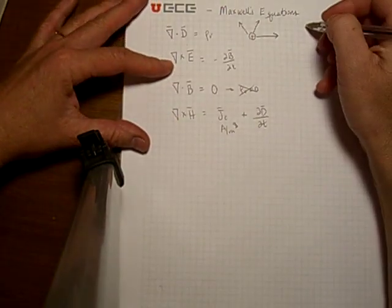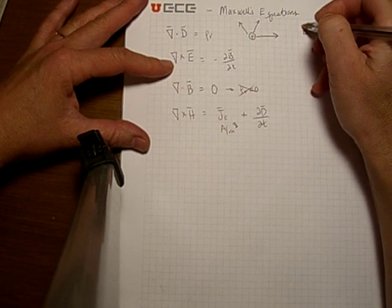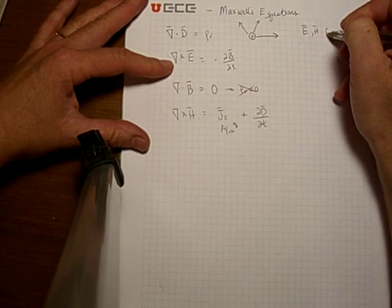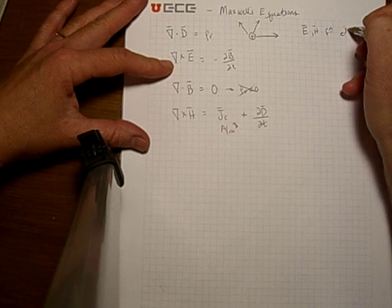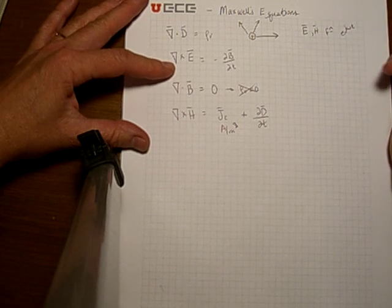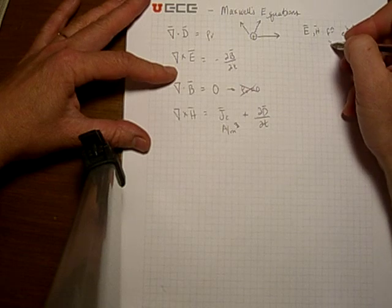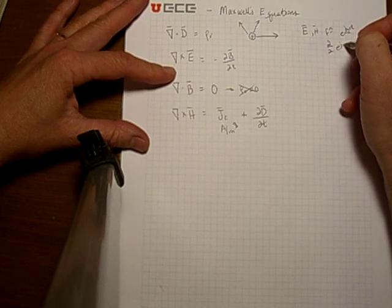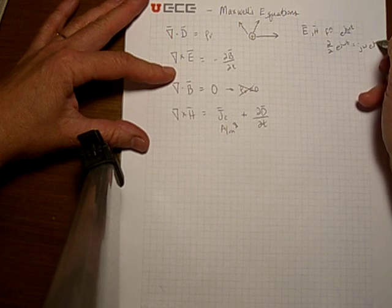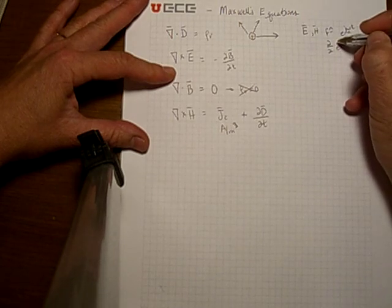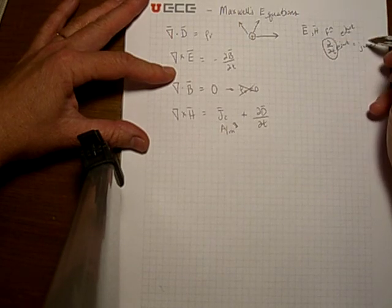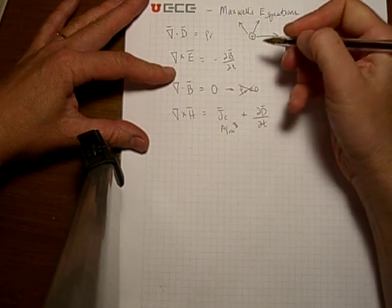Now, if we assumed that all of these fields, E or H, are a function of e to the jωt, that these are sinusoidal fields with a specific frequency omega, then we can see that the time derivative of e to the jωt is jω e to the jωt. So any place that we see a time derivative, we simply substitute jω.